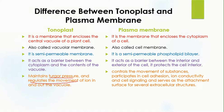The tonoplast maintains turgor pressure and regulates the movement of ions in and out of the vacuole. Turgor pressure means water pressure — the tonoplast maintains the water pressure of the cell, and it also controls which molecules can move in and out of the vacuole.